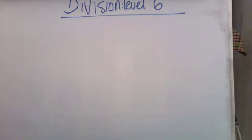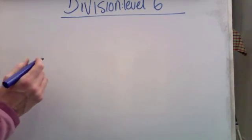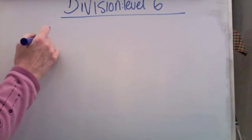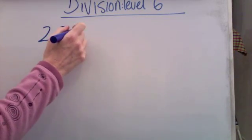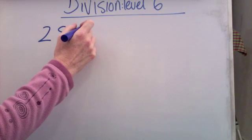Okay, we're going to have a look at some division with remainders. We're going to put the remainders as decimals. So let's have a go. I'm going to divide 28 by 3.